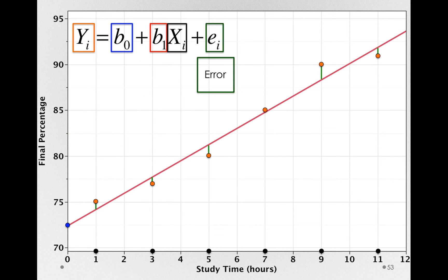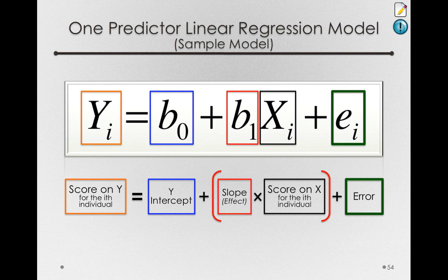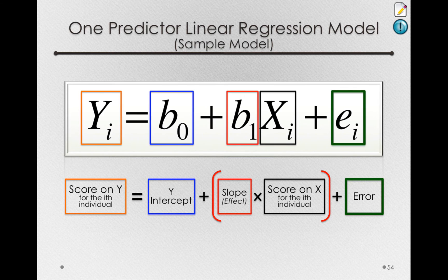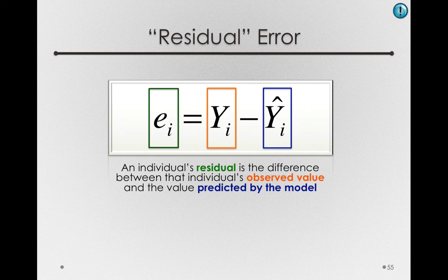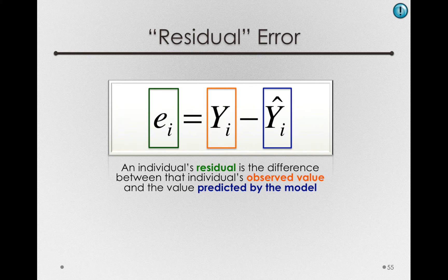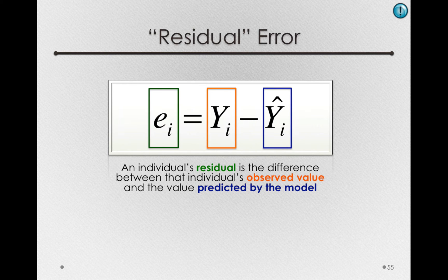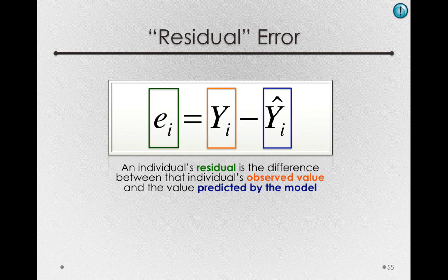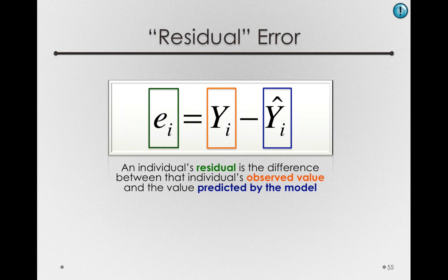Finally, the error in our model, the e sub i, is simply the difference between each of these points and the line of fit. In essence, the line is predicting for each individual a certain amount of final percentage. There's nothing that says that individuals have to have exactly that amount. So there will be variation around the line, and those are the e sub i's. The error in our model is actually a pretty important component. Just like before, the e sub i's are formed on the basis of a residual, a difference between an individual's actual score, the y i, minus the predicted score, the y hat i. Just like our previous linear models, it's simply a model deviation. How much do individuals differ from what is predicted for them?